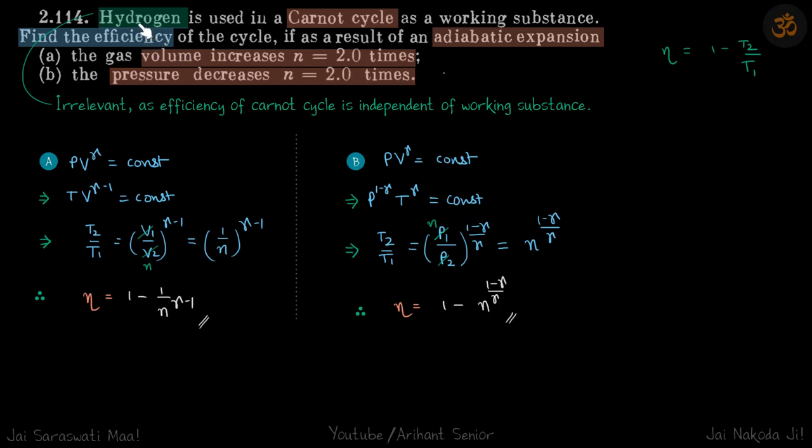Now here the gas is irrelevant as efficiency of Carnot cycle is independent of working substance. We know that efficiency is given by 1 minus T2 by T1, where T1 is the temperature of hot reservoir and T2 is temperature of cold reservoir.